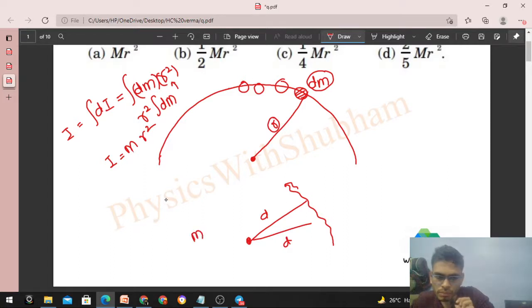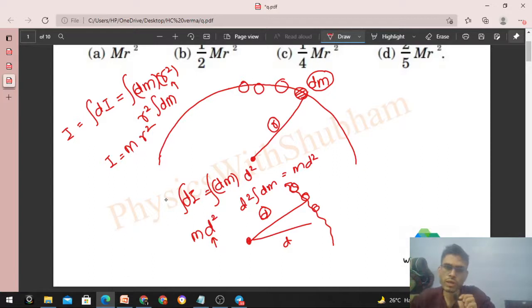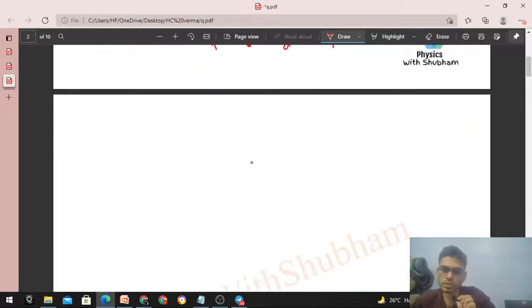will be simply total mass of the body into d square, that fixed distance squared. Now what will you do? Take any dm on the body and write its dI. That will be simply dm into that d square, right? d square is constant, so d square will come out. When we integrate, d square comes out, integration of dm, that is M into d square.